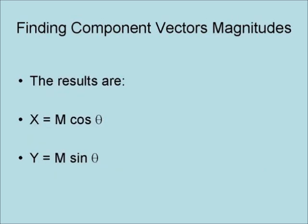The result is that for the magnitude of the x component vector, we have x equals m times cosine of theta. And for the magnitude of the y component vector, we have y equals m times the sine of theta.